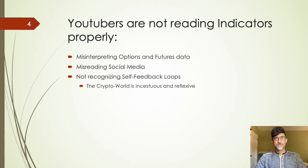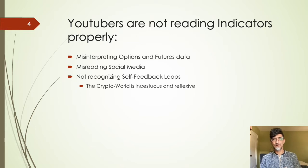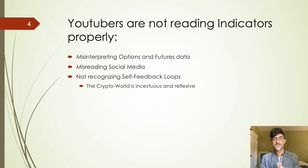YouTube is not reading indicators properly — even when they have good indicators, they're not understanding them correctly. A good example is options. I'll talk about this in a future video with charts on call options activity, open interest, and put options open interest. But for now, the example I give is the put-to-call ratio — that's a contrarian indicator. When the put-to-call ratio is high, meaning over 1, that's actually bullish. When it's below 0.7 or 0.6, that's bearish. But that's not how YouTubers are reading it.